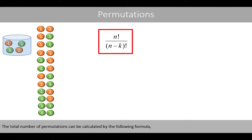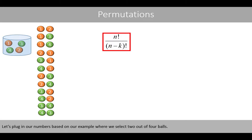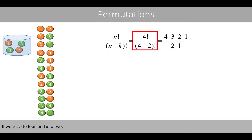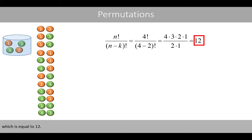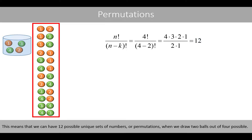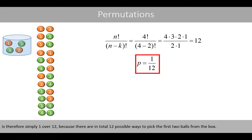The total number of permutations can be calculated by the following formula, where we choose k balls without replacement out of n possible. If we set n to 4 and k to 2, we calculate the factorial of 4 divided by the factorial of 2. We can cancel these numbers so that we are left with 4 times 3, which is equal to 12. The probability of first drawing ball number 4 and then ball number 1 is therefore 1 over 12, because there are 12 possible ways to pick 2 balls.